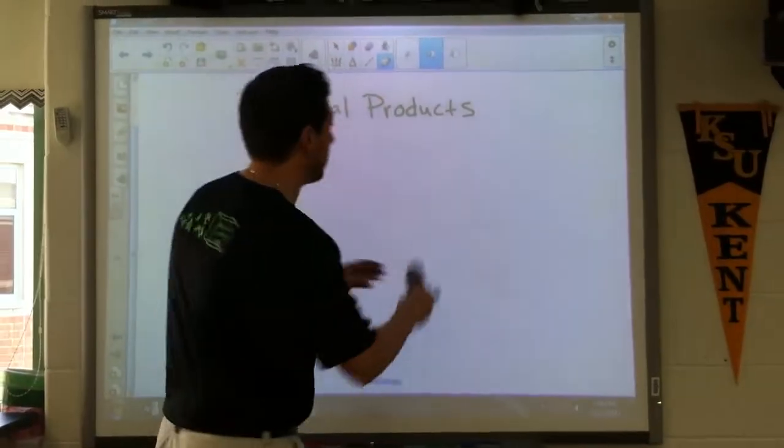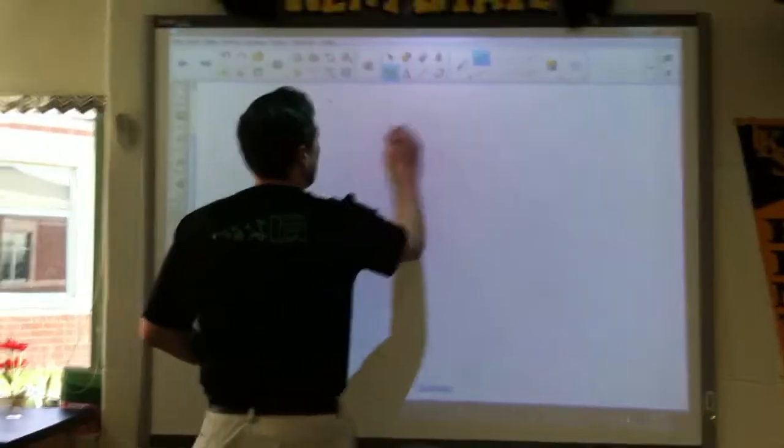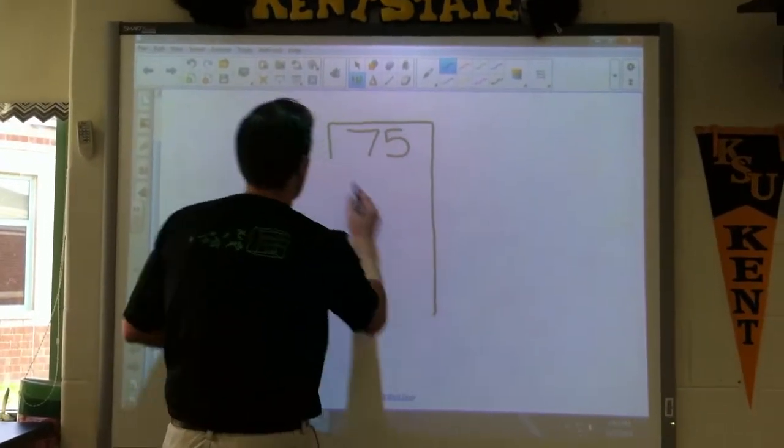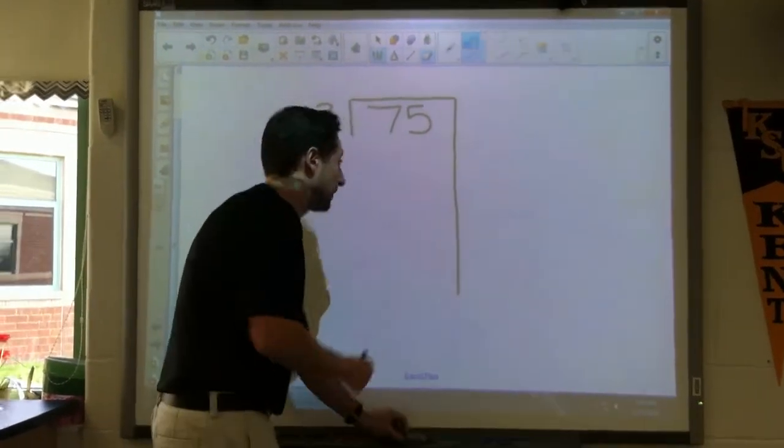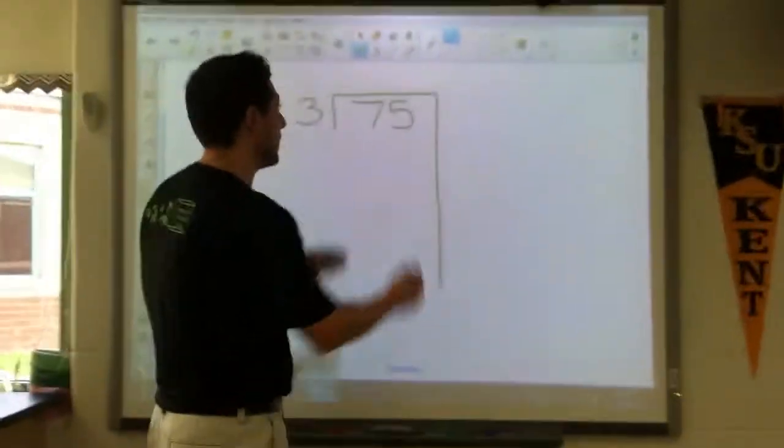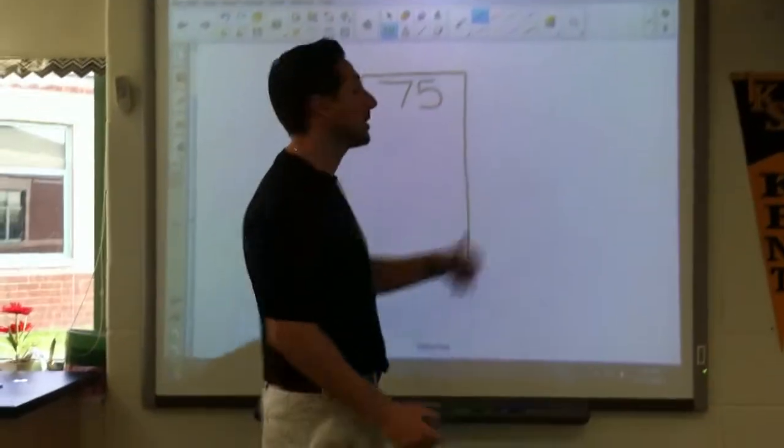So the first problem that we're going to do, let's do something kind of small, something like 75 divided by 3. Now the first thing you might notice is the bracket looks a little bit different than it used to look when we would do the traditional method of division. It's just a bigger bracket, it goes down because we're going to be writing our factors over here as we multiply our way through this.